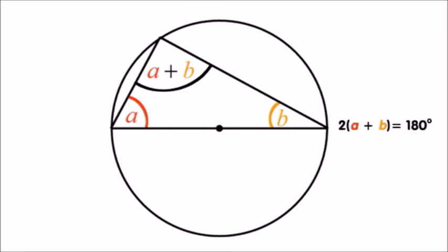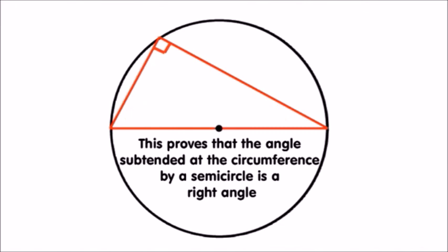If we rearrange this, we find that 2 times (a plus b) equals 180 degrees, and therefore a plus b equals 90 degrees—our right angle. This proves that the angle subtended at the circumference by a semicircle is a right angle.